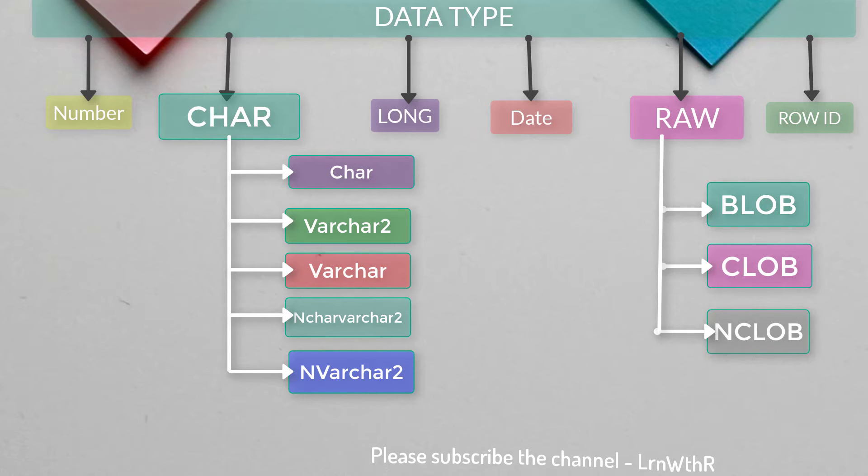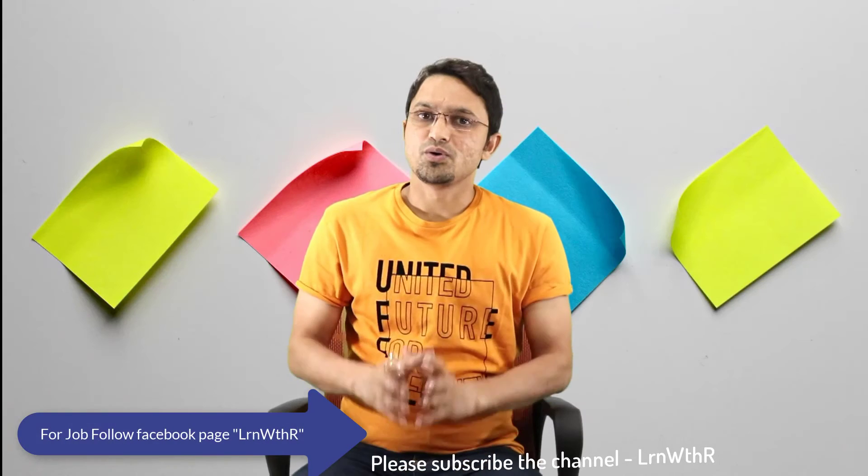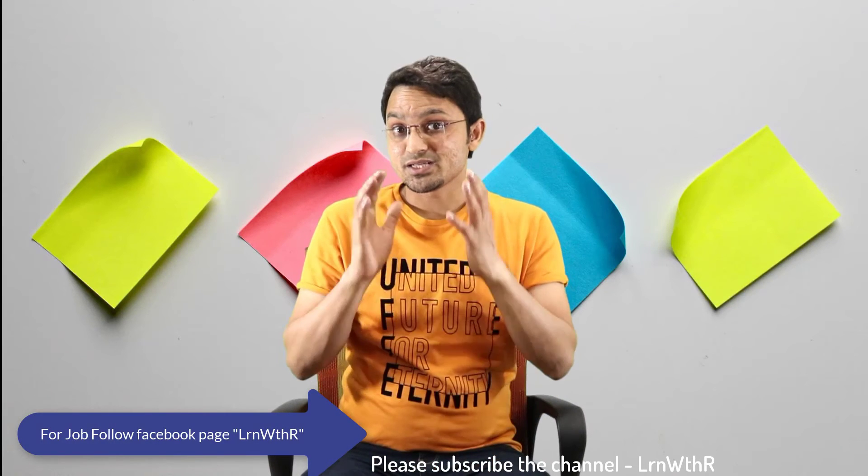Moving on to the next one, which is LONG. LONG doesn't have classifications below that. Moving on to the next one, which is Date. Moving on to the next one, which is RAW. RAW is again classified into sub data types which are BLOB, CLOB, and then NCLOB. And the next one is ROWID. So these are the data types available in the Oracle database.